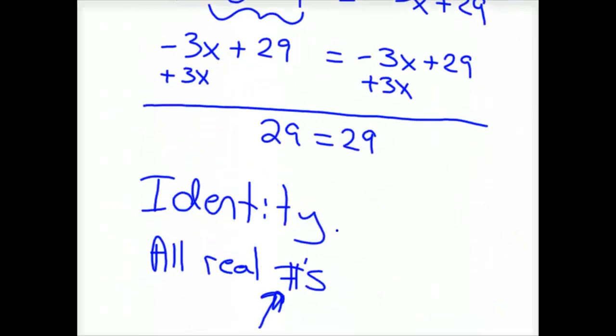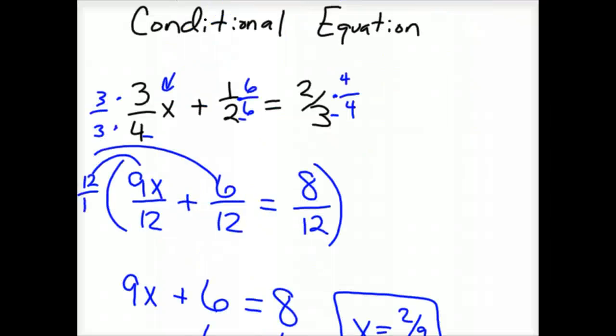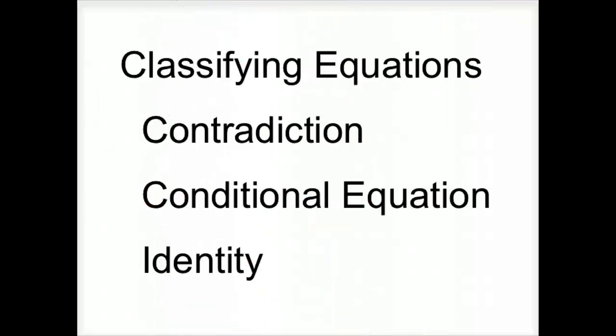So that's an identity equation, which back when you were probably in Algebra 1 or Algebra 2, those were all real numbers—it's typically what your teacher told you to write. So that is the way to classify equations. So you've got 3: you've got contradiction, conditional, and identity.